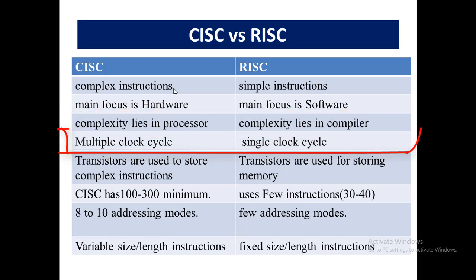CISC provides multiple clock cycles to perform multiple operations. When we want to make a single operation, we have to write multiple instructions to complete the task, so these multiple instructions execute in multiple clock cycles, which increases execution time. While on the other hand, RISC tries to embed all the functionality in a single instruction, so that single instruction takes only one clock cycle to execute.